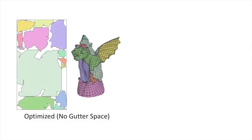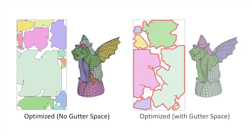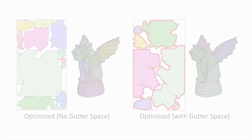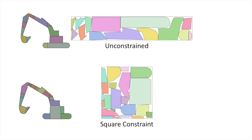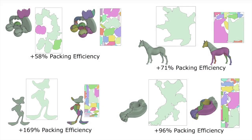Our method can account for application requirements such as gutter space. We can also compute atlases with prescribed aspect ratios. We tested our method on 67 inputs, generated using 12 different cutting and unfolding methods.